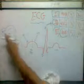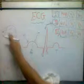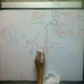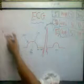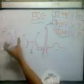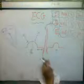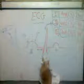When the impulse comes to the AV node, the PR segment represents conduction from the AV node to the bundles. When the electricity passes through the ventricle, they contract, making the QRS complex. This is ventricular depolarization or ventricular contraction.